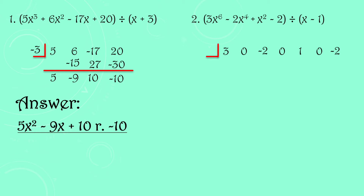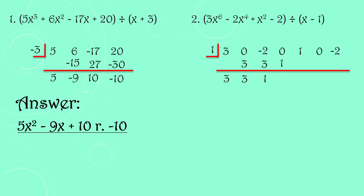To get the divisor, the sign of the last term in the divisor (x − 1) is negative 1, so the opposite sign is positive 1 — that is our divisor. Bring down 3, then multiply and add repeatedly: 3 × 1 = 3, add to 0 → 3. Then 3 × 1 = 3, add to −2 → 1. Then 1 × 1 = 1, add to 0 → 1. Then 1 × 1 = 1, add to 1 → 2. Then 2 × 1 = 2, add to 0 → 2. Then 2 × 1 = 2, add to −2 → 0.